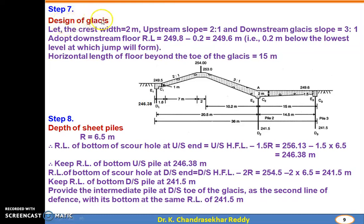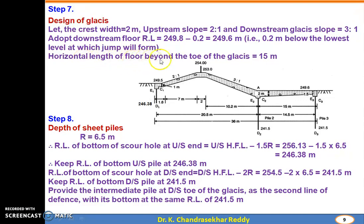Step 7: Design of glacis. Crest width is taken as 2 m. Upstream glacis slope = 2:1. Downstream glacis slope = 3:1. Downstream floor RL = 249.8 - 0.2 = 249.6 m (0.2 m below the lowest level at which the jump will form). Horizontal length of floor beyond the toe of the glacis = 15 m.